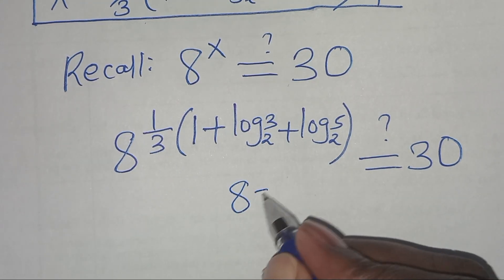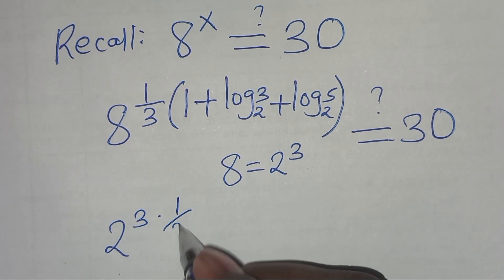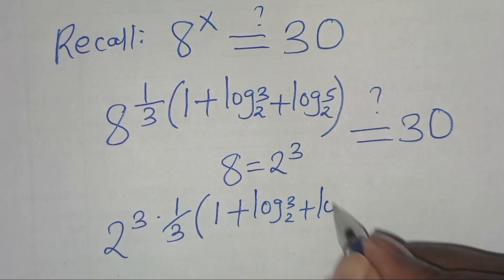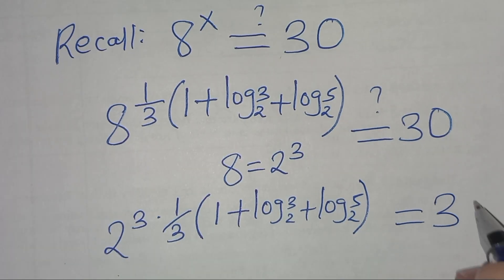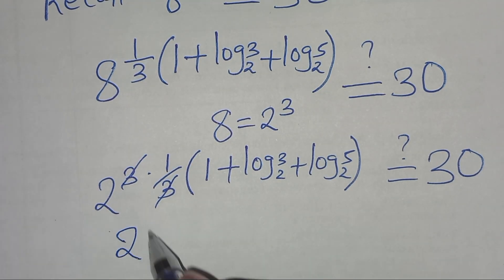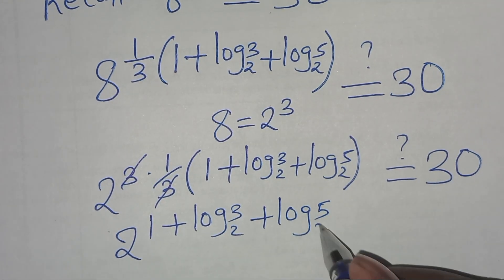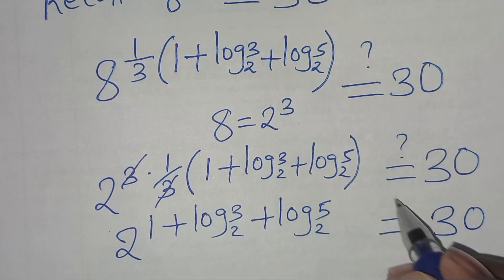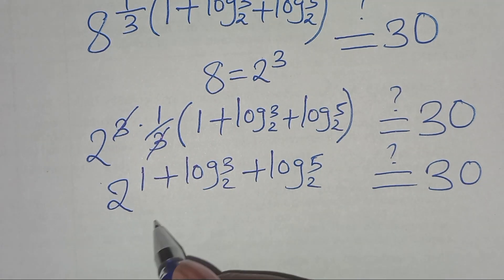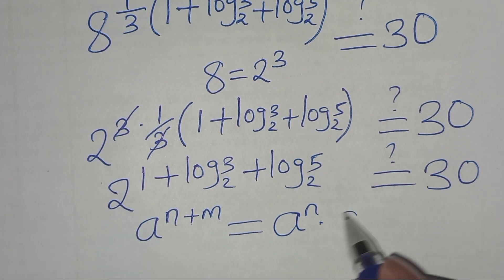Let's simplify: since 8 = 2^3, dividing by 3 gives us 2 to the power (1 plus log 3 to base 2, plus log 5 to base 2). This is in the form of a to the power (n plus m), which we can express as a to the power n times a to the power m. Applying this exponent property, we have 2 to the power 1, times 2 to the power (log 3 to base 2), times 2 to the power (log 5 to base 2).